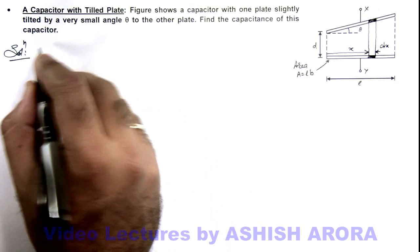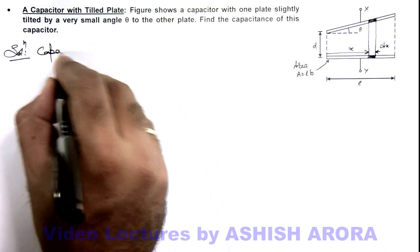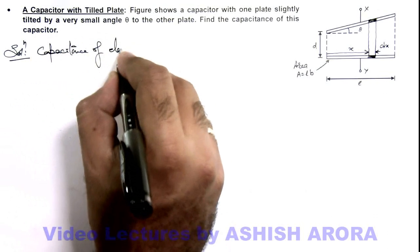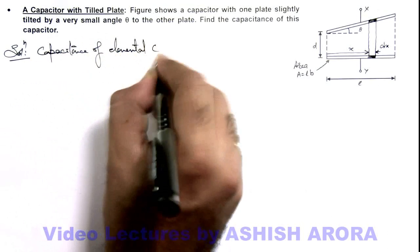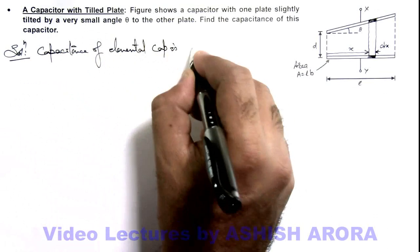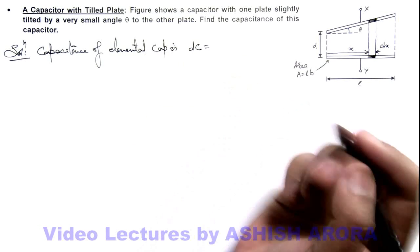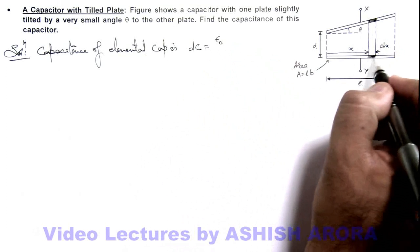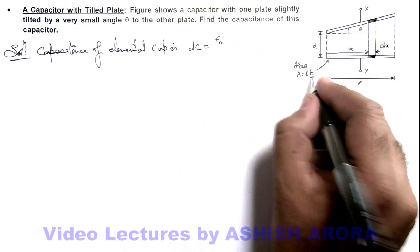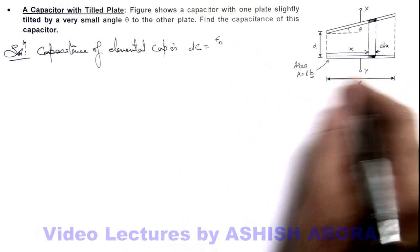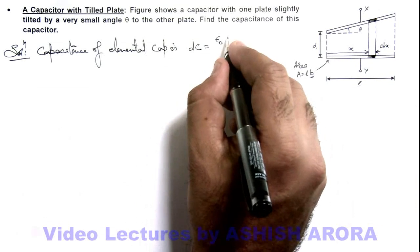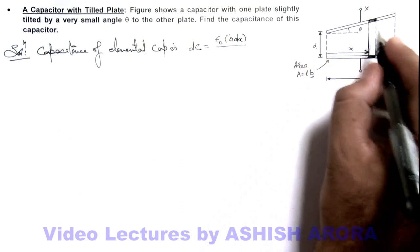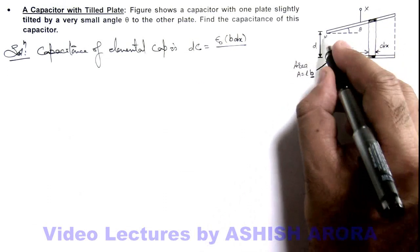So here, if we write the capacitance of the elemental capacitor, this we can write as dc which is epsilon not A by d. And the area of the plates can be taken as dx multiplied by b, where b is the width of the plate as the plate area is lb. So this is epsilon not b dx, the plate area, divided by the separation between the plates, which is d.